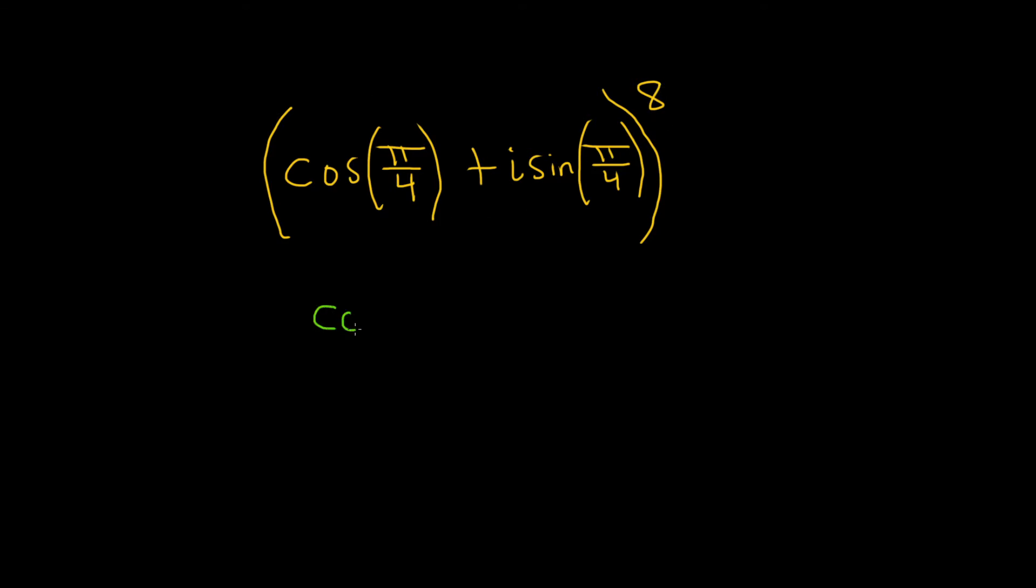This becomes the cosine of, and then you just take this number here and multiply it by this. So it'll be eight times pi over four. And then plus i sine, then do the same thing here, eight times pi over four. So eight times pi over four, just like that.